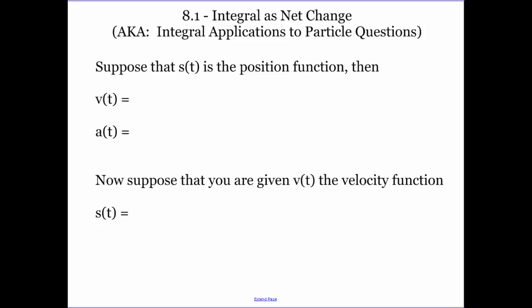Today we're going to be talking about integral as net change. And we've already semi-talked about this. So suppose that we have a position function. Then to get our velocity function, you guys know we take the derivative of the position function. To get acceleration, we take the derivative of velocity, which is the same thing as the second derivative of position. Now suppose that we're given our velocity function. How do we move backwards to get our position function? How do we undo a derivative? We take our integral. So we're going to take the integral of our velocity function.